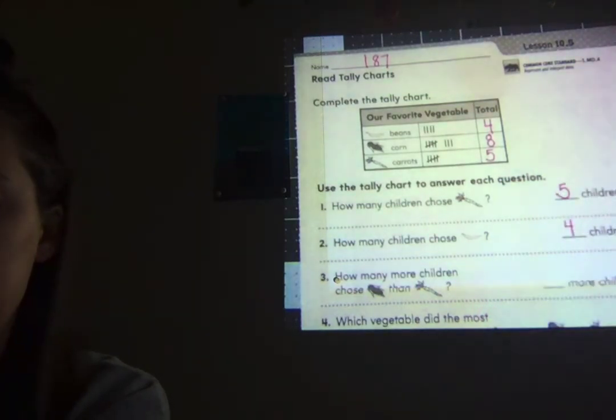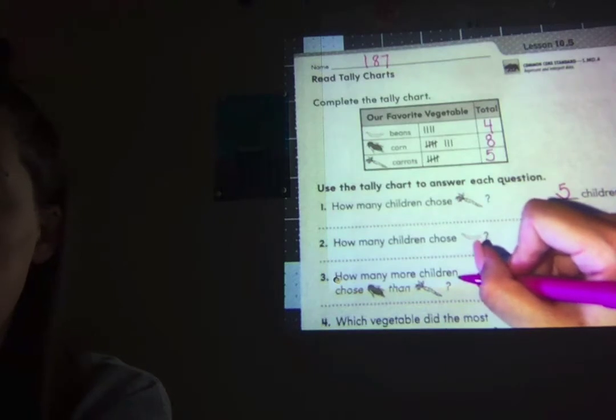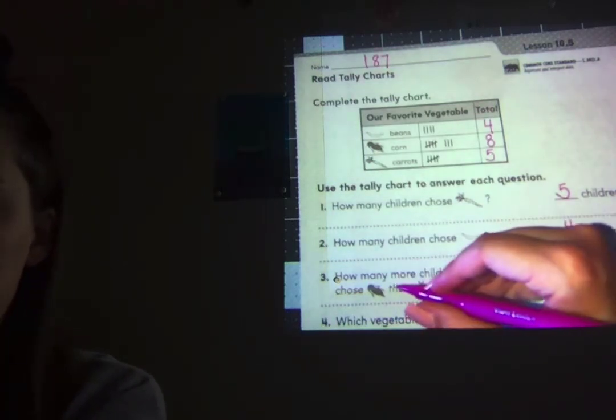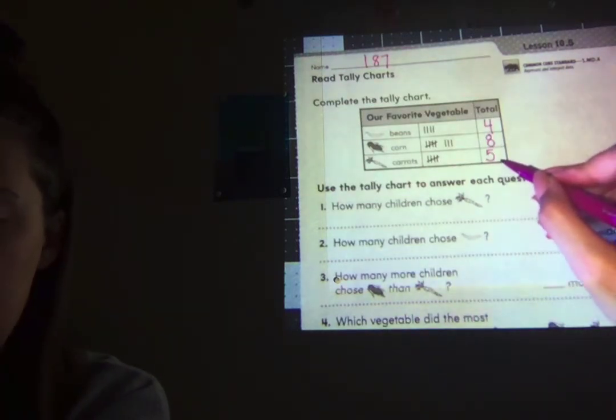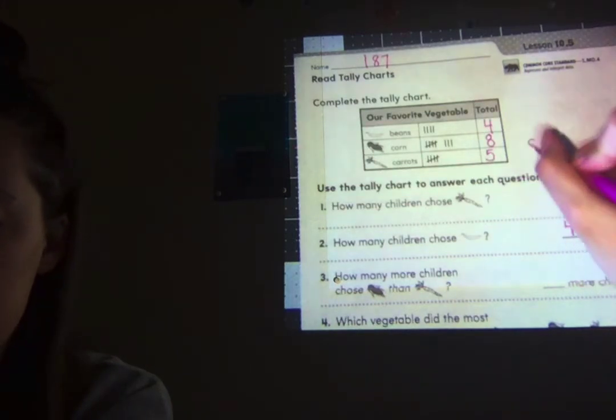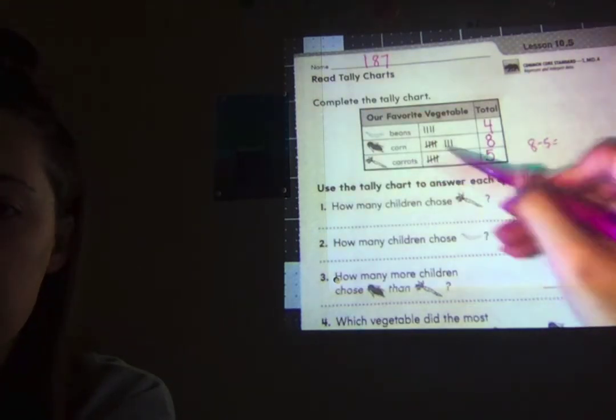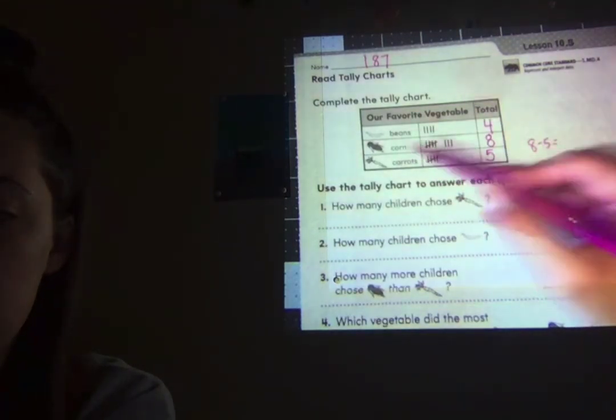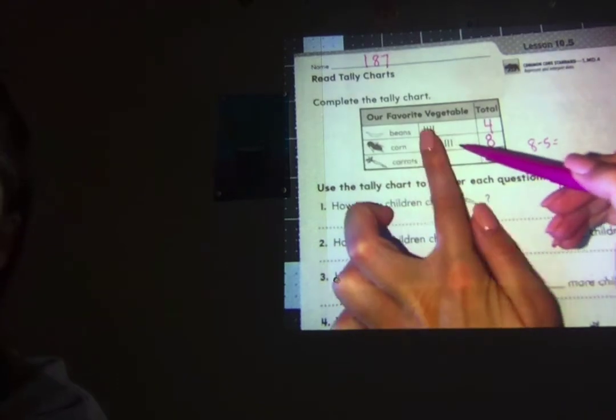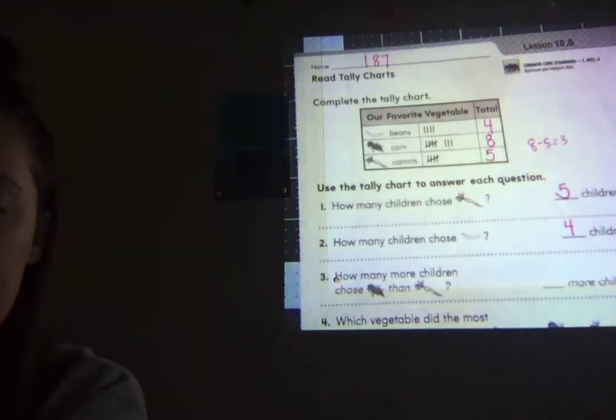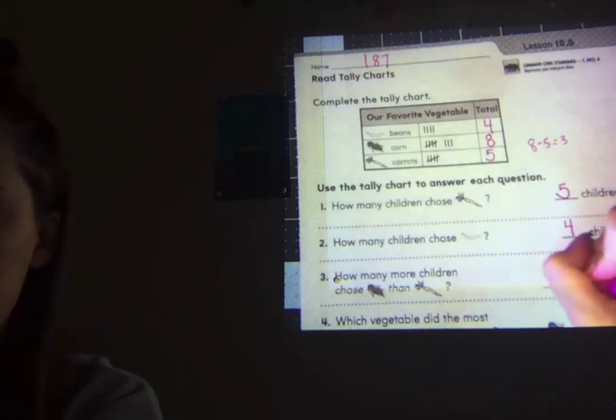Those kinds of questions should be pretty simple. It's this third type of question that's going to get a little bit tricky. It says how many more children chose corn than carrots? Okay, so eight chose corn and five chose carrots. How many more is eight than five? There's a couple of ways that you could do this. You could just do eight minus five and figure out what that is. Or you could look right at the tallies and say, okay, well, corn has how many more tallies than carrots? Three more. Either way, you're going to get the same answer. Three more children liked corn than carrots.